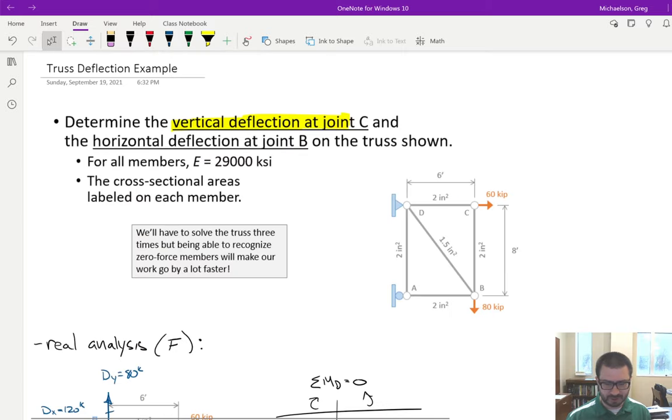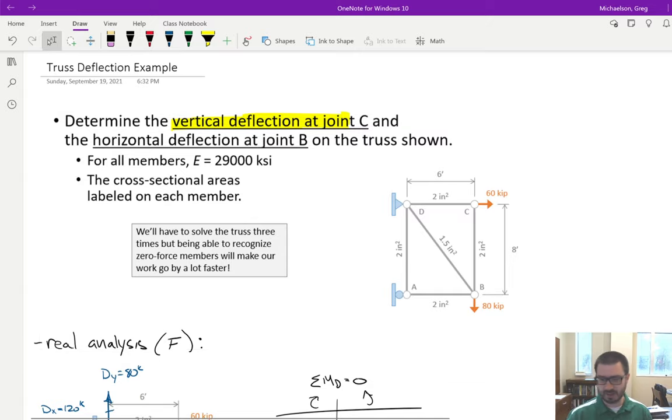If you go to the original truss, you might think, well, you've got this 60 kip load here at C going to the right, so probably joint B deflects to the right, but it actually doesn't, it deflects to the left. I'll show you that a couple of different ways here in a bit.